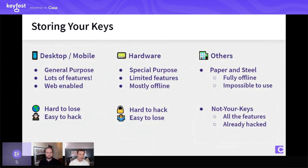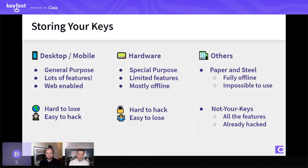So we've got desktop and mobile, which are hard to lose but easy to hack. We've got hardware, which is hard to hack but easy to lose. Then there are paper and steel keys, which are fully offline with no interaction whatsoever with computers — that's by design. At the same time, they're pretty much impossible to use in that medium. If anyone can run through the 50 pages of calculus required to actually generate a Bitcoin transaction by scratch using pen and paper, that's incredibly impressive — but I'm going to call it impossible for 99.999% of the population.